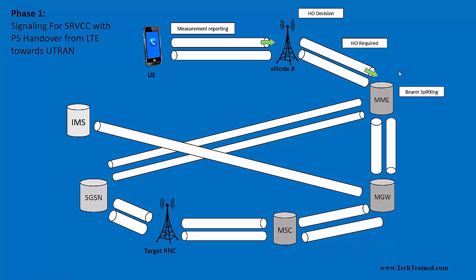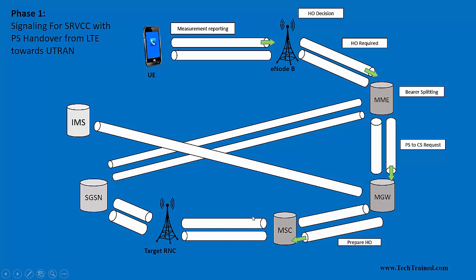Once this message is received by the MME, it is going to split that message into two portions — packet switch and circuit switch — because it has to send the required request towards the respective parties. For the circuit switch portion, the MME will forward a PS-to-CS request towards the MSC server. Once received by the MSC server, it forwards the same request towards the target MSC, which then inquires whether the target RNC is ready to take that handover request.